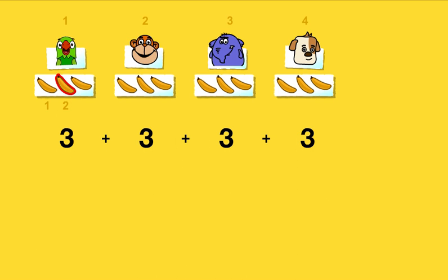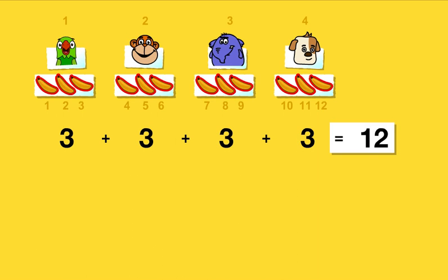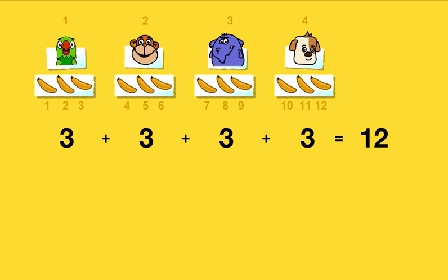One, two, three, four, five, six, seven, eight, nine, ten, eleven, twelve. Three plus three plus three plus three equals twelve. Twelve bananas — Gul needs twelve bananas for his party.